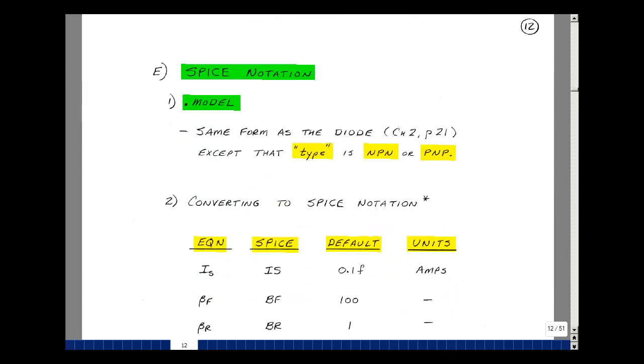In SPICE, different models are described or distinguished with the dot model line, and the same is true for the BJT. We talked about this with the diode in Chapter 2 on page 21. What's different here is instead of having a D for type, which stood for diode, we would put NPN or PNP.